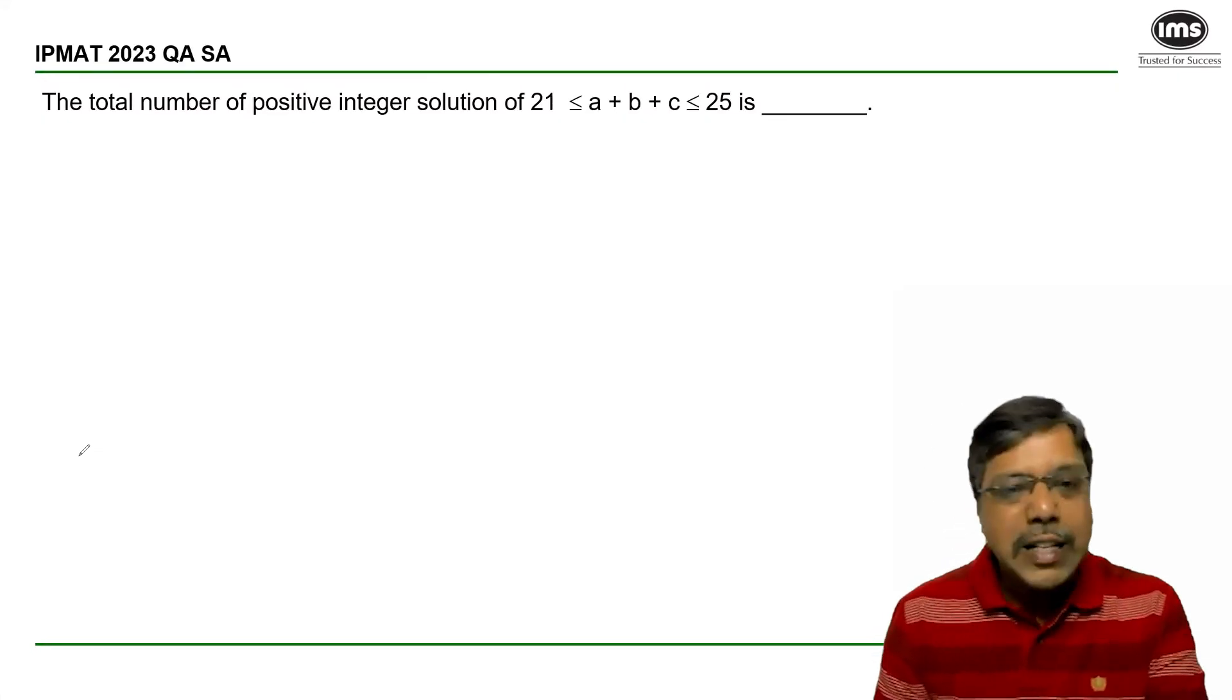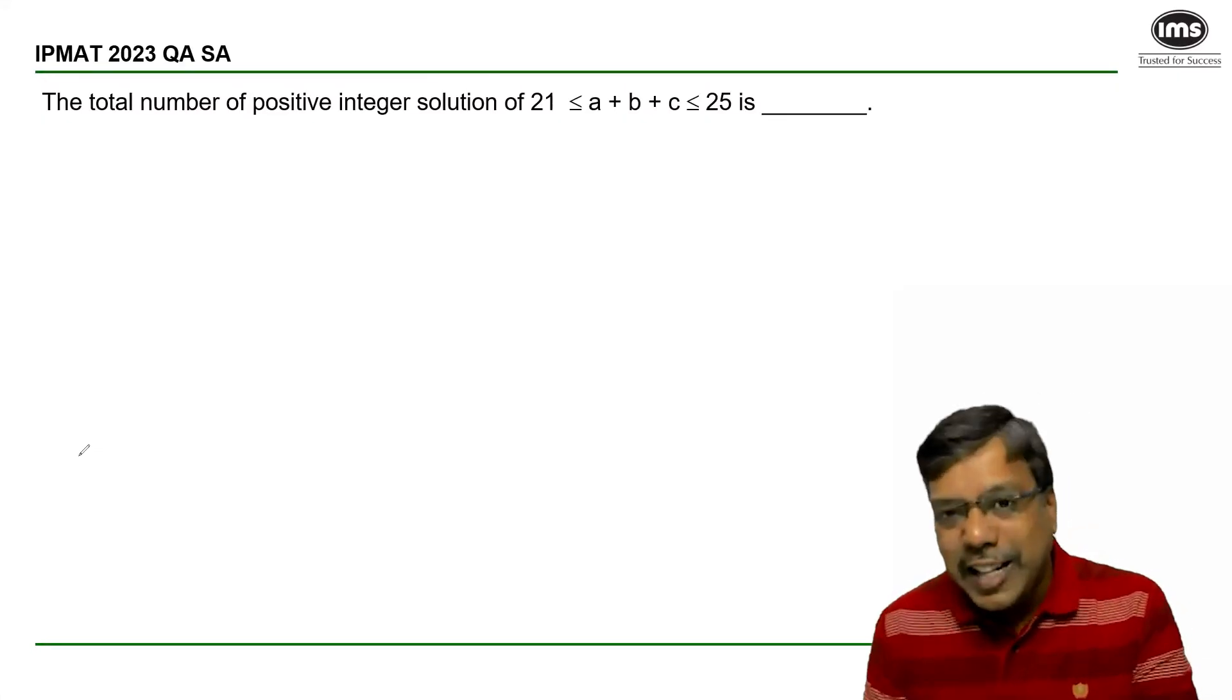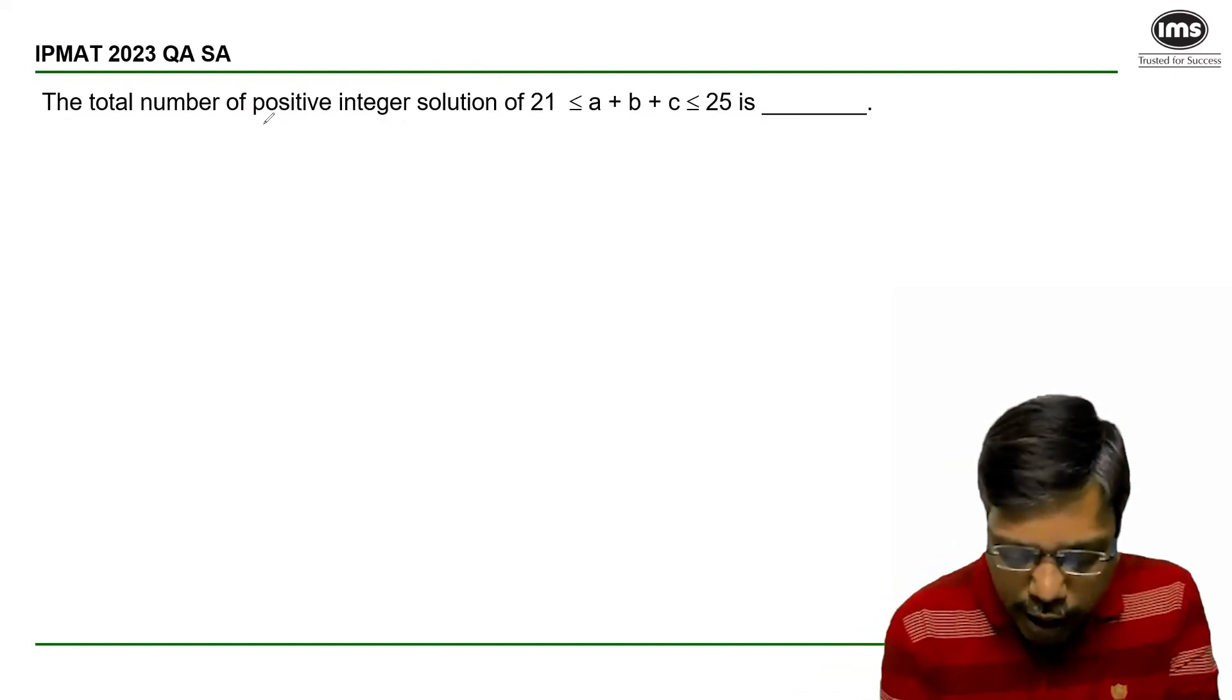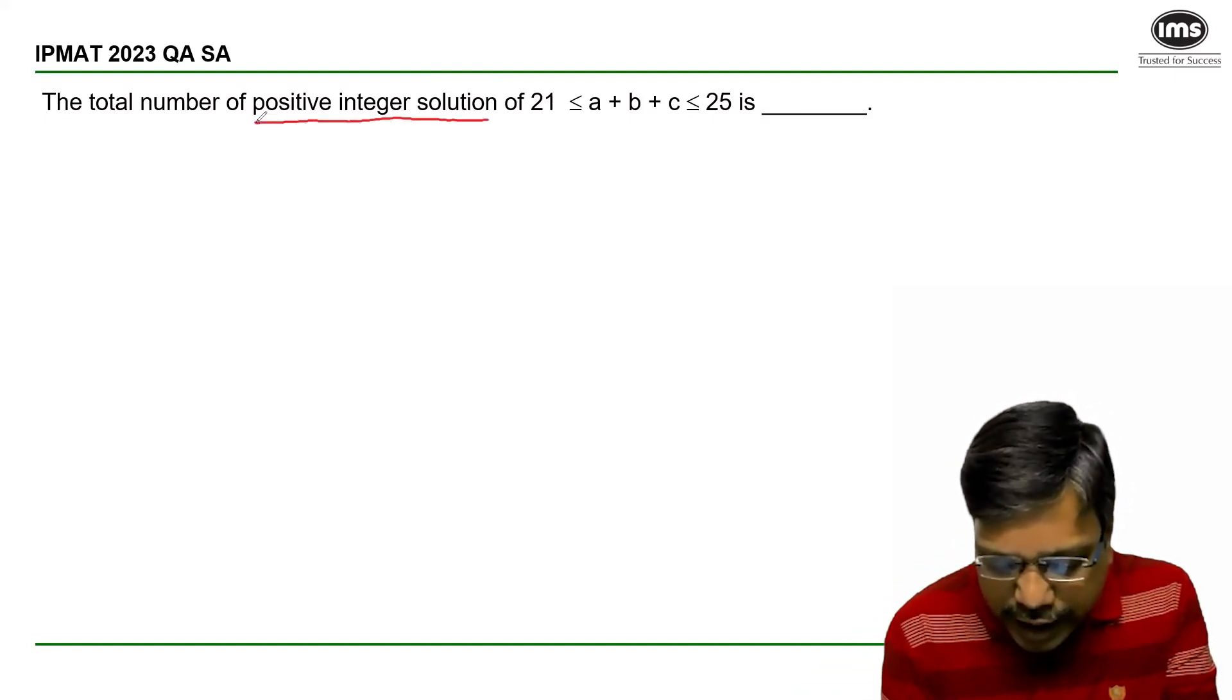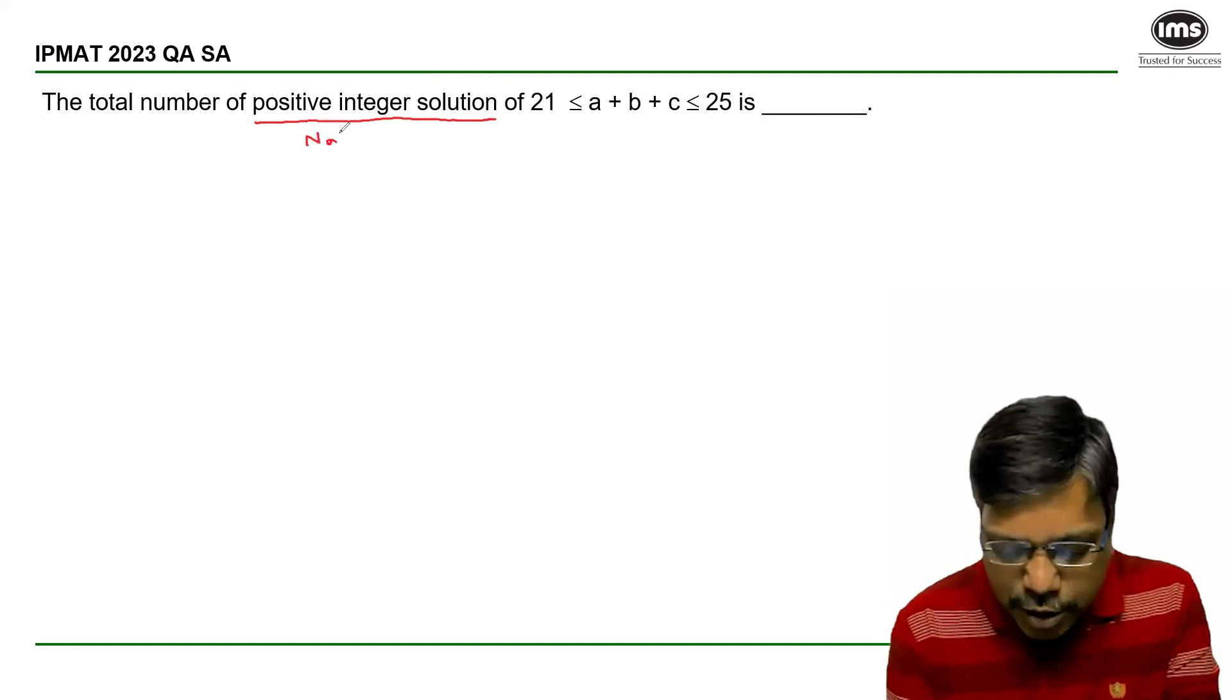Let's see how to answer this question that has appeared in IPMAT 2023 QA short answer section. The total number of positive integer solutions - positive integers means natural numbers.